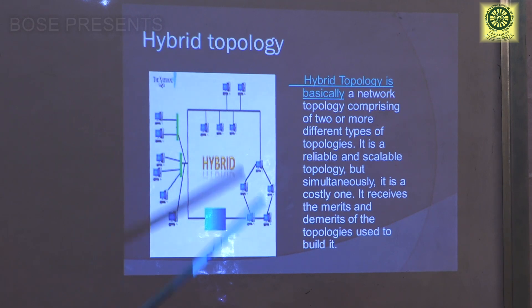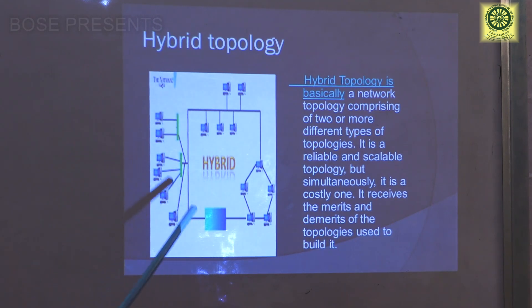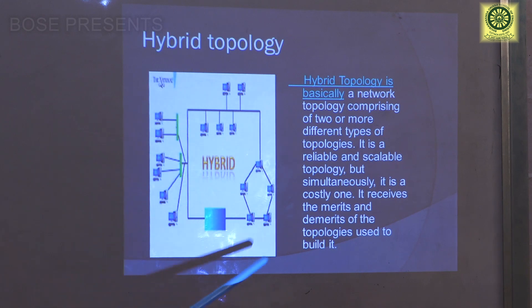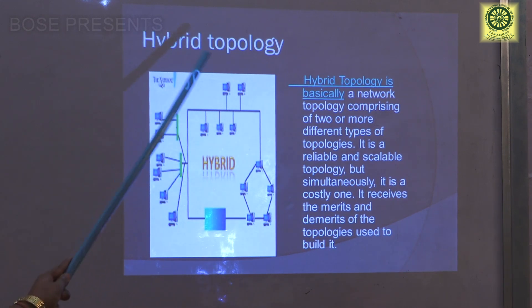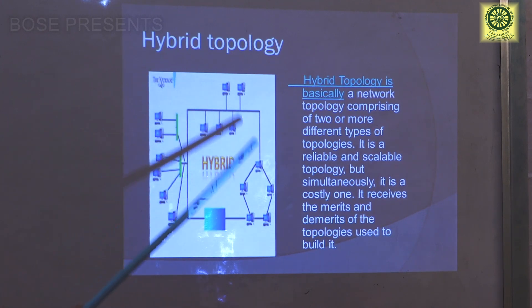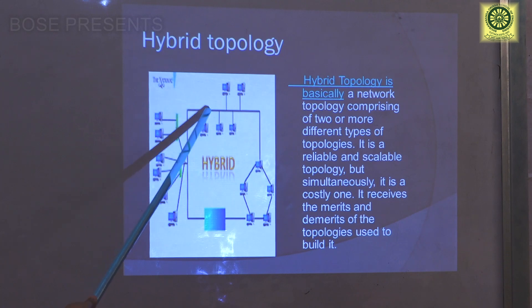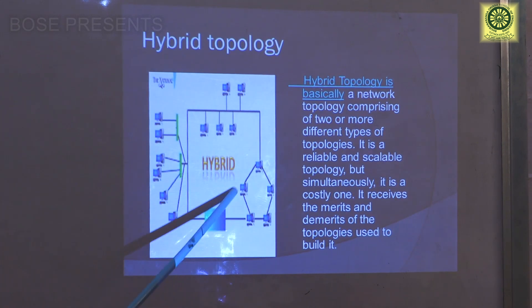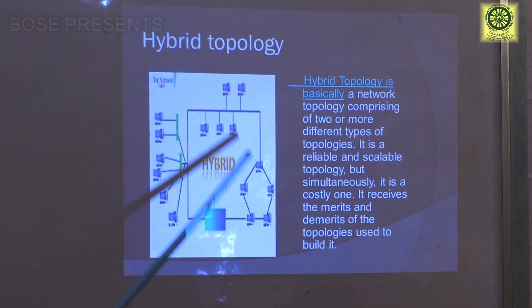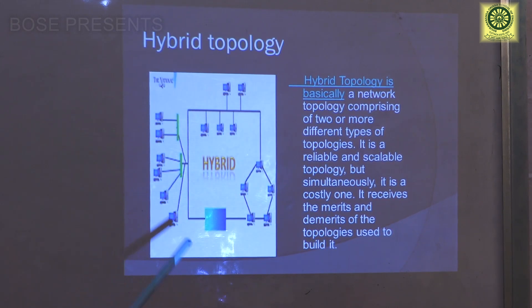Coming to hybrid topology — this is the last one. As you can see in this diagram, hybrid means configuring all the topologies in one single LAN connection. Here is the bus topology, here is the tree topology, and here is the ring topology. All these topologies combined together form the hybrid topology.